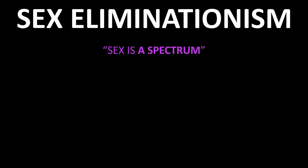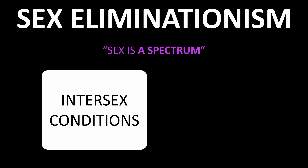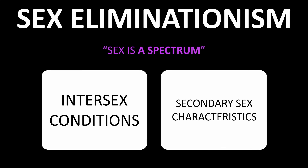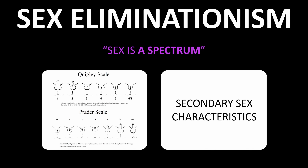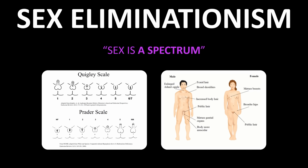The sex eliminationist argument is encapsulated in the term 'sex is a spectrum,' which has two main supporting arguments: one based on intersex conditions and one based on secondary sex characteristics. Intersex conditions are conditions that result in the appearance of ambiguous sex in terms of genitalia, or a mismatch between chromosomes and outward appearance. Secondary sex characteristics are the differences that arise during puberty — males grow taller, get more upper body strength, voices get lower, more facial hair; women develop breasts, wider hips, different fat distributions.